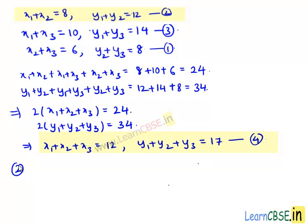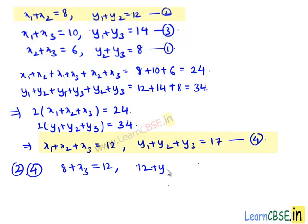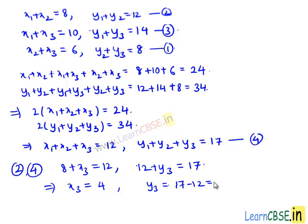Taking equation number 2 and equation number 4, we have x1+x2 = 8, so 8 + x3 = 12. Also y1+y2 = 12, so 12 + y3 = 17. This implies x3 = 12 − 8 = 4, and y3 = 17 − 12 = 5. Hence the coordinates of point C are (4, 5).